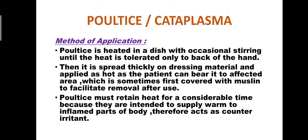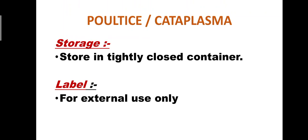Method of application of cataplasma: the poultice is heated in a dish with occasional stirring until the heat is tolerated only on the back of the hand. It is then spread thickly on dressing material and applied as hot as the patient can bear to the affected area, which is sometimes first covered with muslin to facilitate removal. The poultice must retain heat for a considerable time as it is intended to supply warmth to inflamed parts of the body. Storage: stored in a tightly closed container; labelled for external use only.